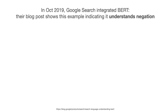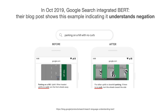In October 2019, Google search integrated BERT. Their blog post shows an example that indicates it understands negation. They had the query 'parking on a hill with no curb,' and their image shows that before BERT, they retrieved a document talking about a curb, while after BERT, they retrieved a document talking about no curb.